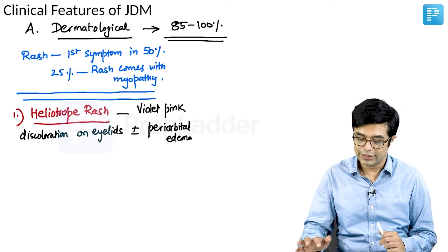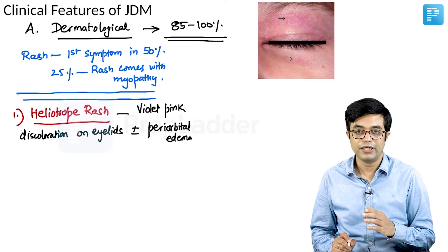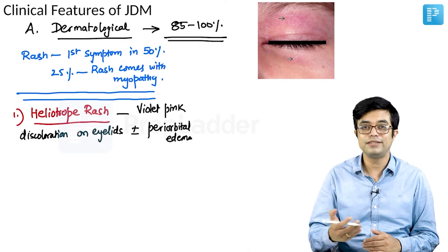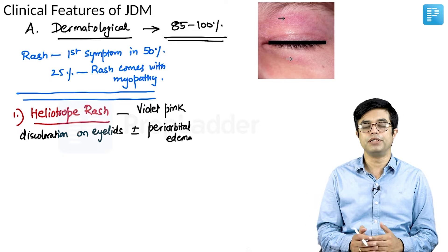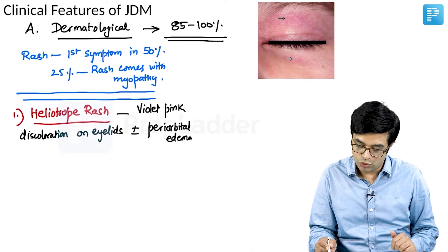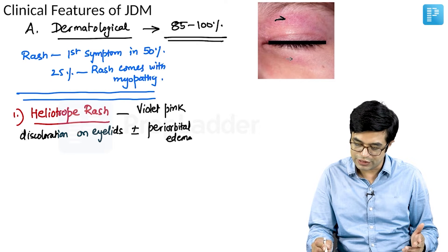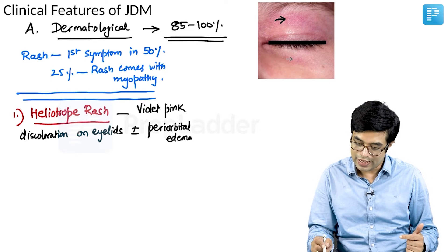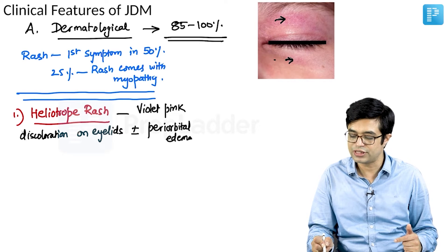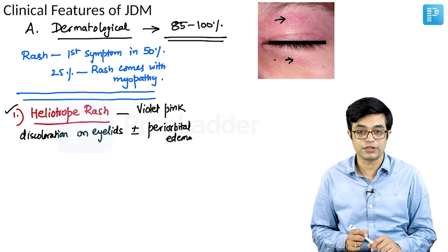If I have to show you a picture, this is a rash of heliotrope. It can sometimes be missed by individuals. It is more commonly easily seen in fair-skinned individuals compared to dark-skinned ones. As you can see in this picture, there is a bluish-white or violet-pink color discoloration which is present on the upper eyelid and it may be associated with some degree of periorbital edema as well. A few lesions are seen on the lower eyelid as well. Heliotrope rash is the first feature which is seen.